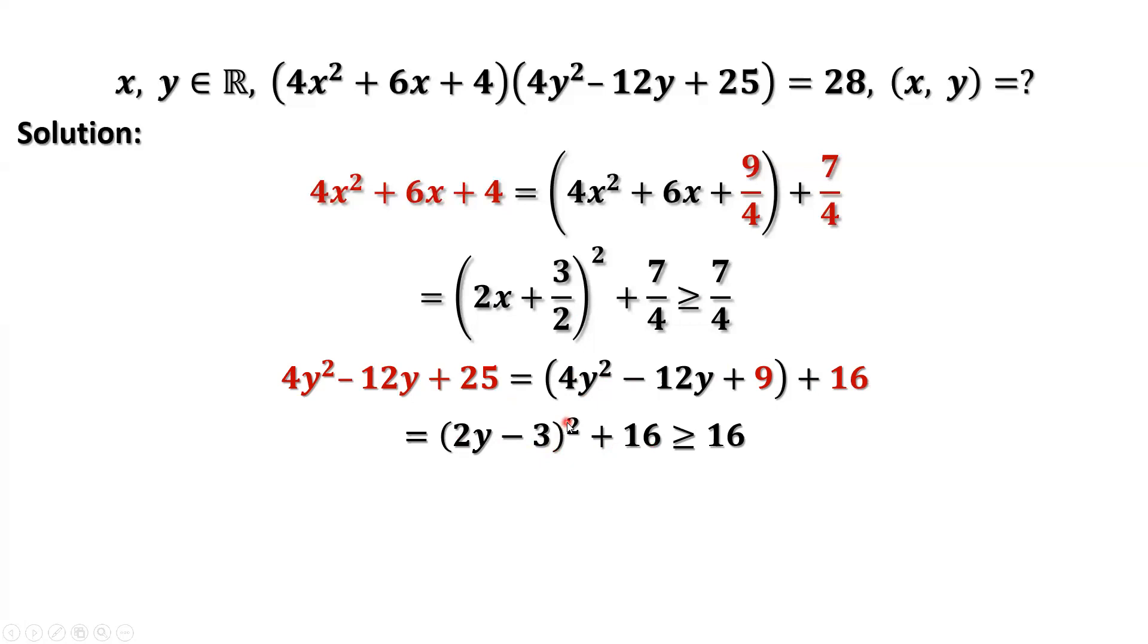Anything square is always bigger than or equal to 0. Therefore, this part is bigger than or equal to 16. The equal sign holds if and only if 2y minus 3 equals 0.